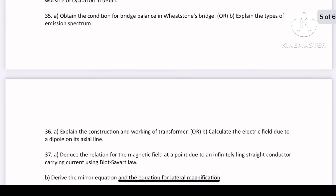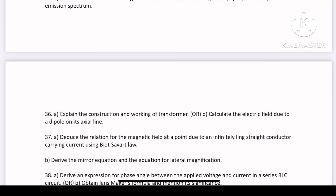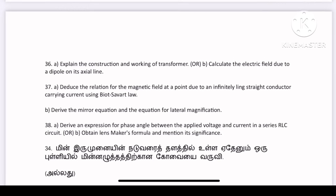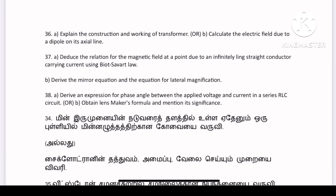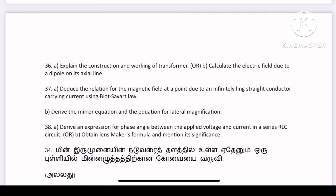Explain the construction and working of a transformer. Calculate the electric field — the axial line here is 36. Voltage in an R-L-C circuit. We are talking about the top 12 questions — there are 18 to 5-mark questions. The video is linked in the description. If you look at the video in the description, you will see the top 3 to 4 topics.